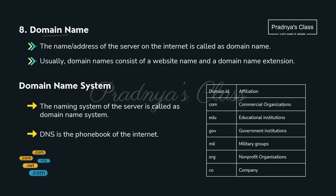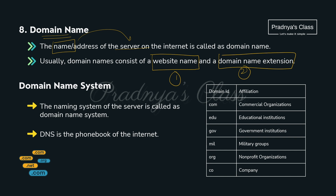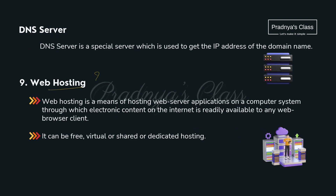What is a domain name? It is the name or address of the server. A domain name has two parts: the website name and the extension. Here are some examples of extensions. Web hosting is uploading content on the internet so that it is available to any browser or client.